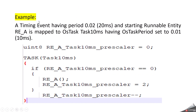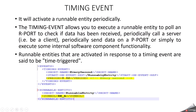Here is an example of how the RTE will generate code when you configure a timing event with a period of 20 milliseconds starting a runnable entity called RE_A. This is a simple name, and with this same name you have to write a corresponding C function. This name is also used to map the runnable entity inside the events.